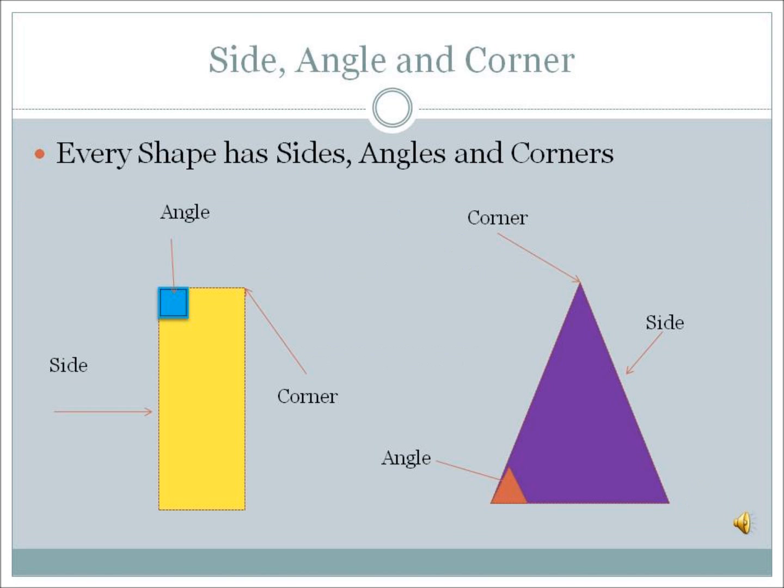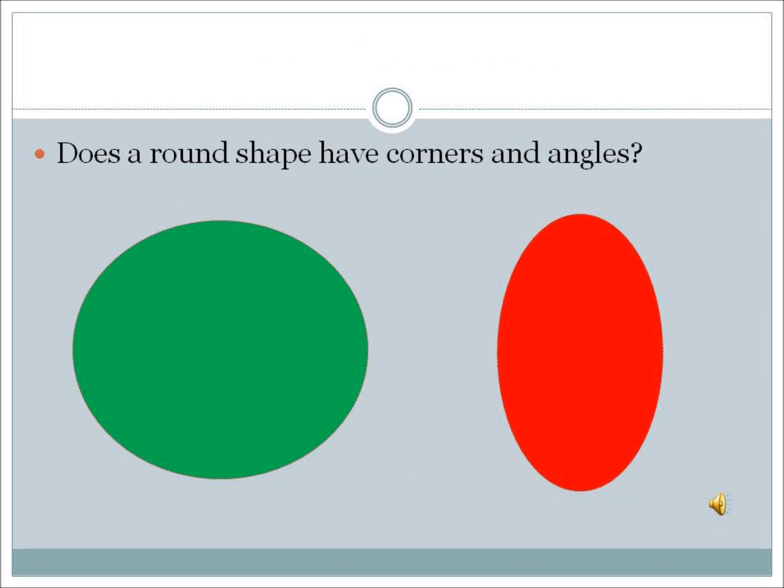Every shape has sides, angles and corners. Does a round shape have corners and angles? No, because it is one continuous line.